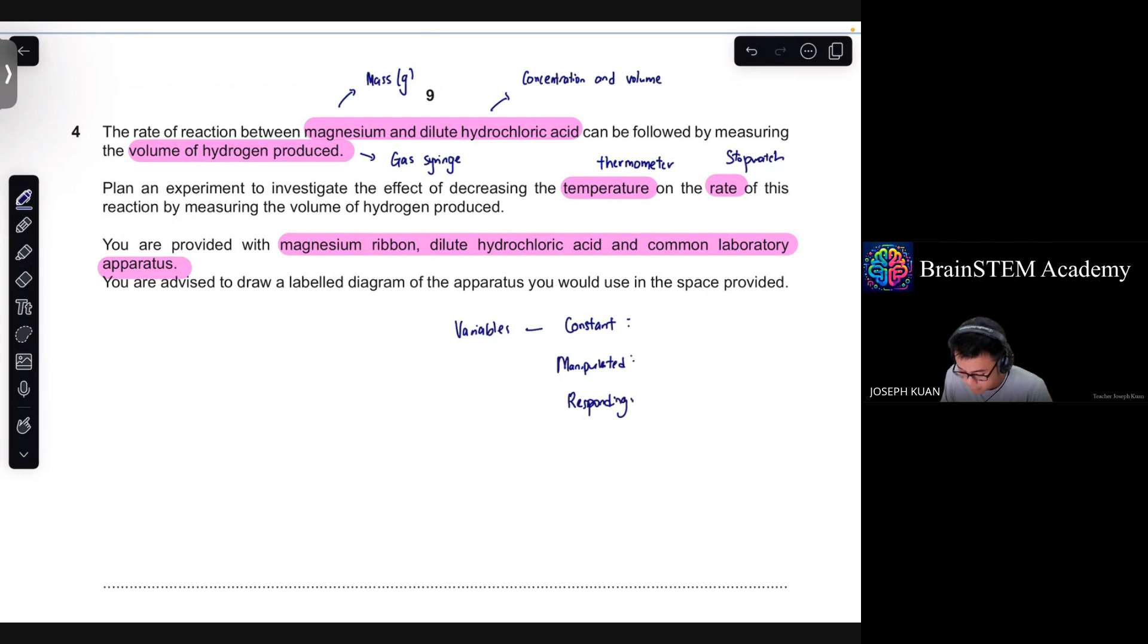Manipulator variable will be the temperature. Responding will be the rate of the reaction, which in a quantitative manner, it will be the volume of hydrogen gas produced per time. And then for the constant variable, it's every other variable other than these two variables. So including the mass of magnesium, the concentration and the volume of HCl, etc.